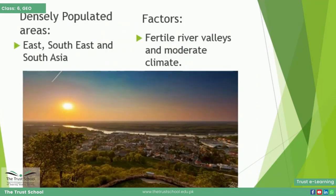The first densely populated region is East, Southeast, and South Asia. In this area, countries like China, Japan, Indonesia, Philippines, Vietnam, India, Pakistan, and Bangladesh are very densely populated. Fertile river valleys and the moderate climate of coastal areas are the main reasons for high density.